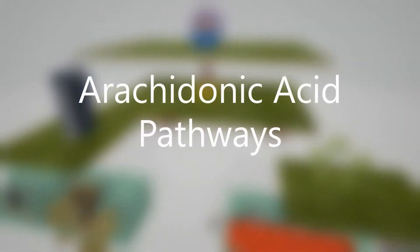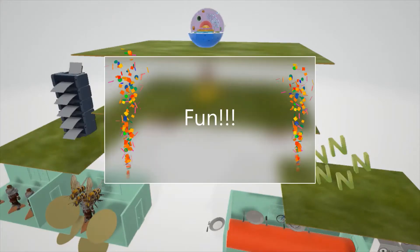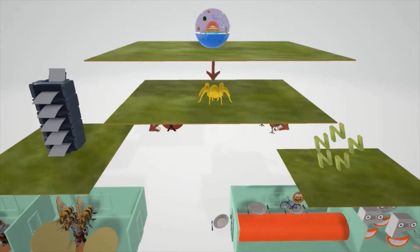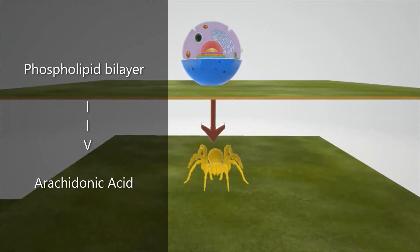In this video we're going to talk about arachidonic acid pathways. Arachidonic acid pathways can be really complicated, but let's try to make it a lot of fun. Arachidonic acid is a fatty acid that comes from the cell's phospholipid bilayer. That's why we have a cell with a membrane, and off of the membrane comes a spider — 'arachna' means spider — a yellow spider with acid, representing arachidonic acid coming off of the phospholipid bilayer.